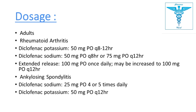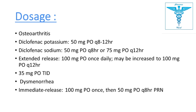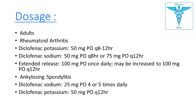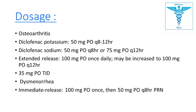In ankylosing spondylitis, the dose of Diclofenac sodium is 25 mg orally 4 to 5 times daily, whereas Diclofenac potassium is 50 mg orally every 12 hours. For osteoarthritis, the dose is the same as previously discussed for rheumatoid arthritis.